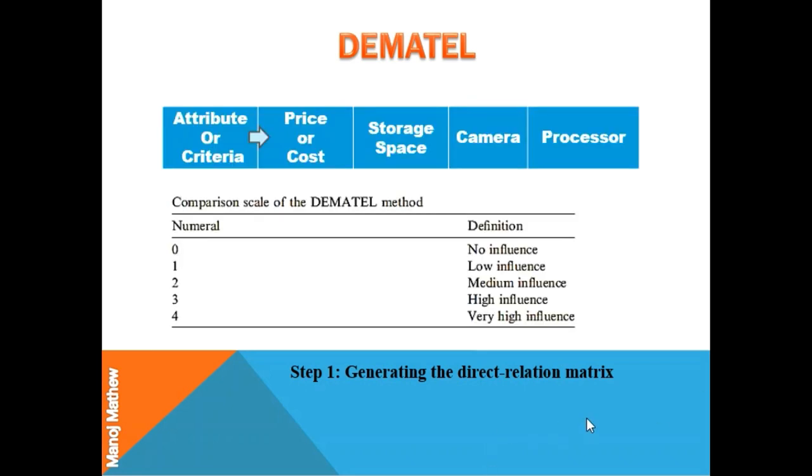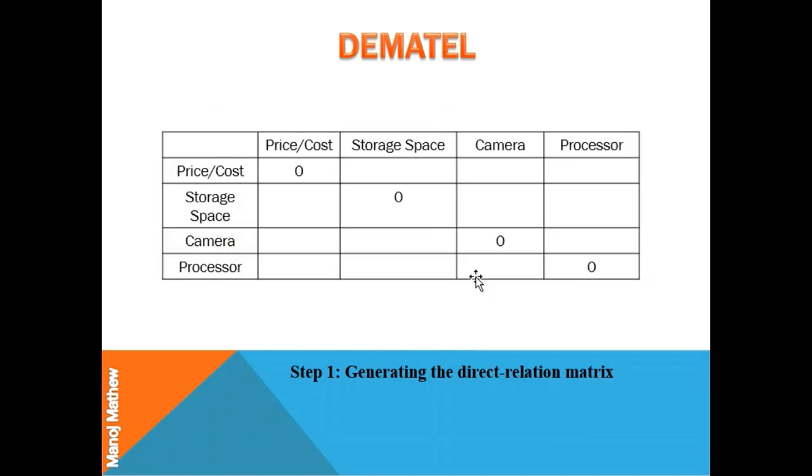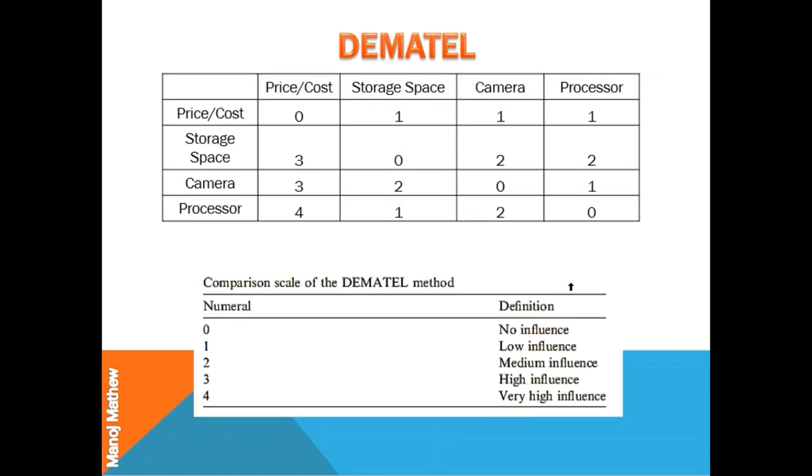The matrix is created with the help of a comparison scale where 0 represents no influence. The influence of a particular criteria over itself is 0, so all the diagonal elements will be 0. Next, we ask the decision maker to find the value of other cells using this comparison scale.